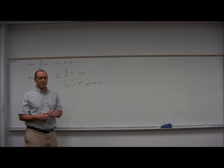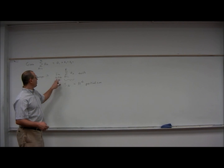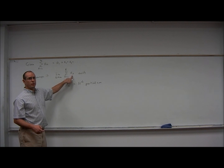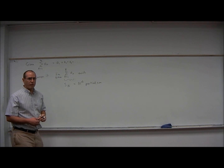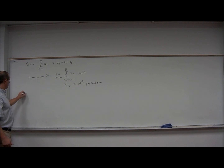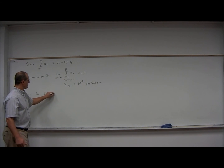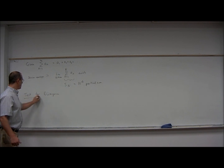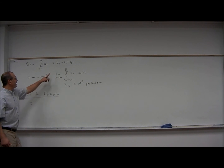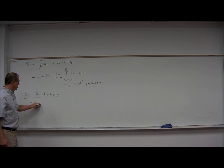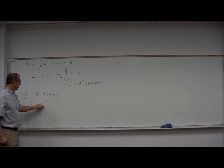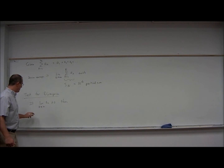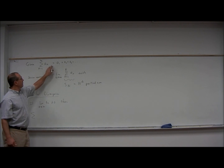The test for divergence says the only hope for this limit to exist is if the individual numbers, the a sub n's, become very, very small. In other words, the test for divergence says if these numbers are not becoming small — if their limit is not zero as n goes to infinity — then the series will not converge.